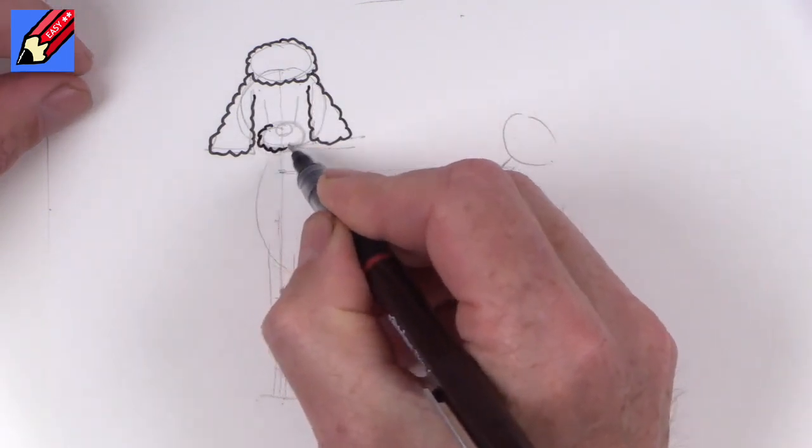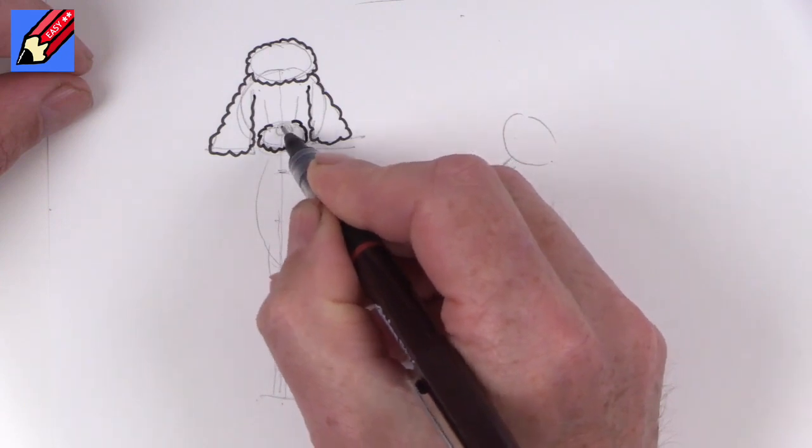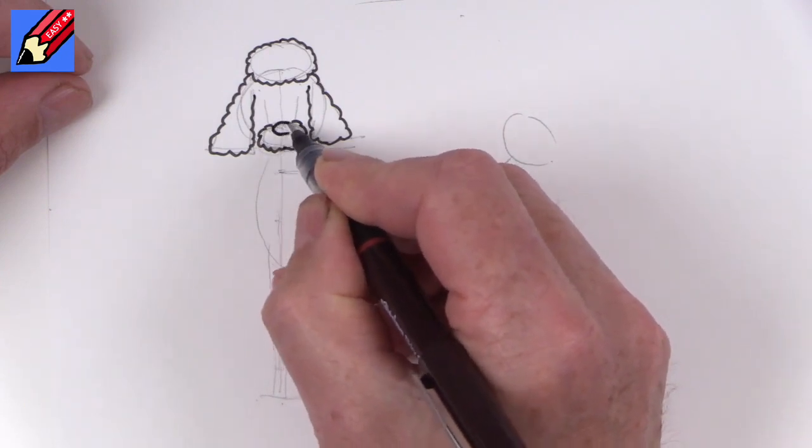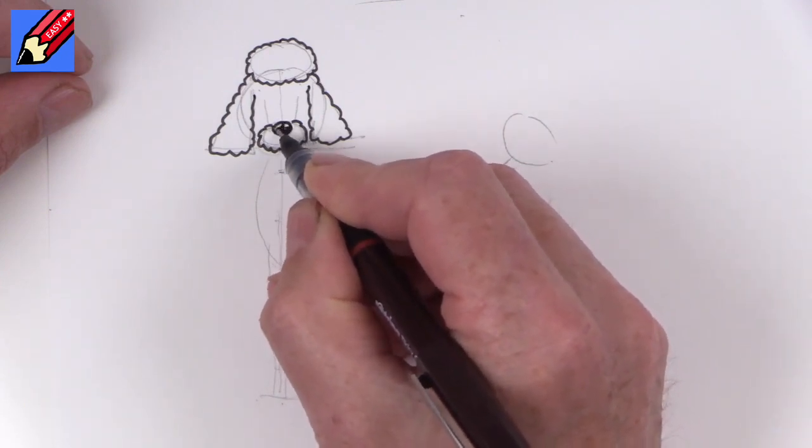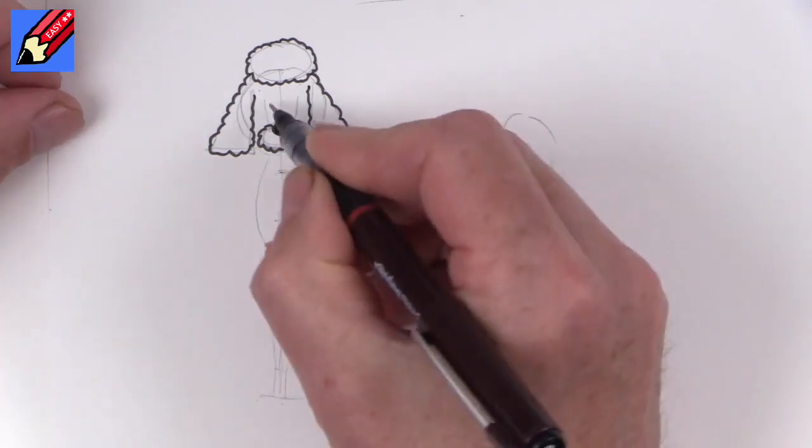And then we want to do this snout there with a nose. Now draw a little circle in there and shade it. So that's the nose.